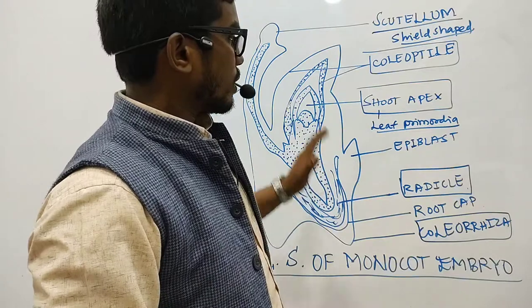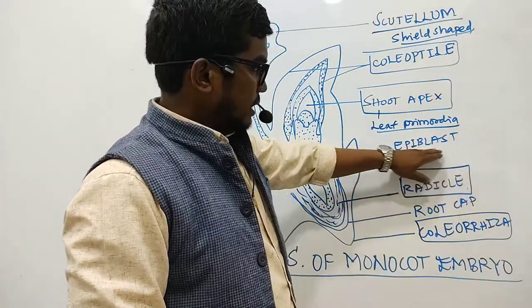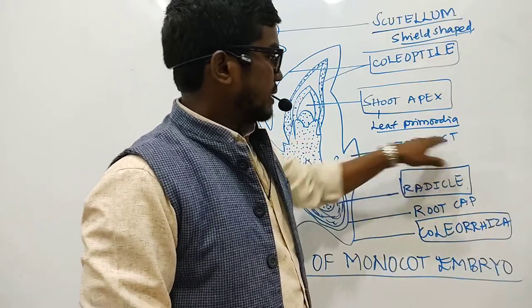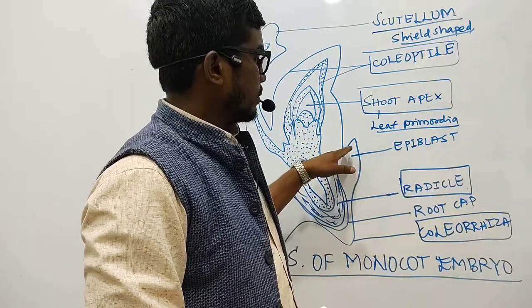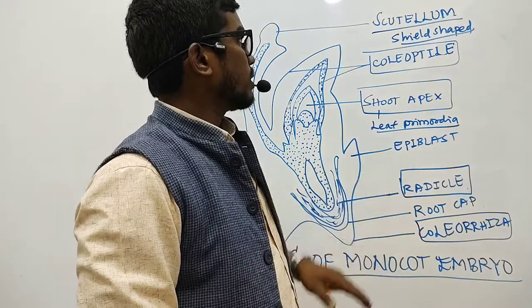Just below the shoot apex, let me also tell you that there is a structure called epiblast. It's just a projection which we can find here with respect to the monocot embryo. Generally it is present here but it is generally absent with respect to the dicot embryo.